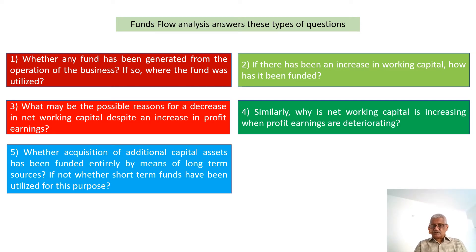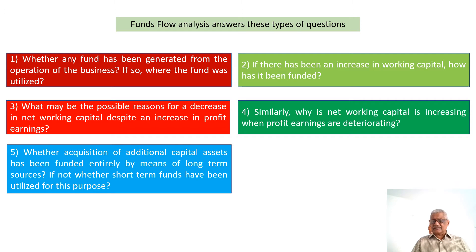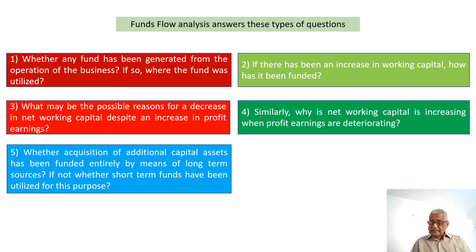Fifth, and most importantly: whether acquisition of additional capital assets — such as land and building or machinery — has been funded entirely by long-term sources. Sixth: or if not, whether any short-term funds have been utilized for that purpose. It is expected that short-term uses are funded by short-term sources plus margin, and long-term uses are funded by long-term sources.